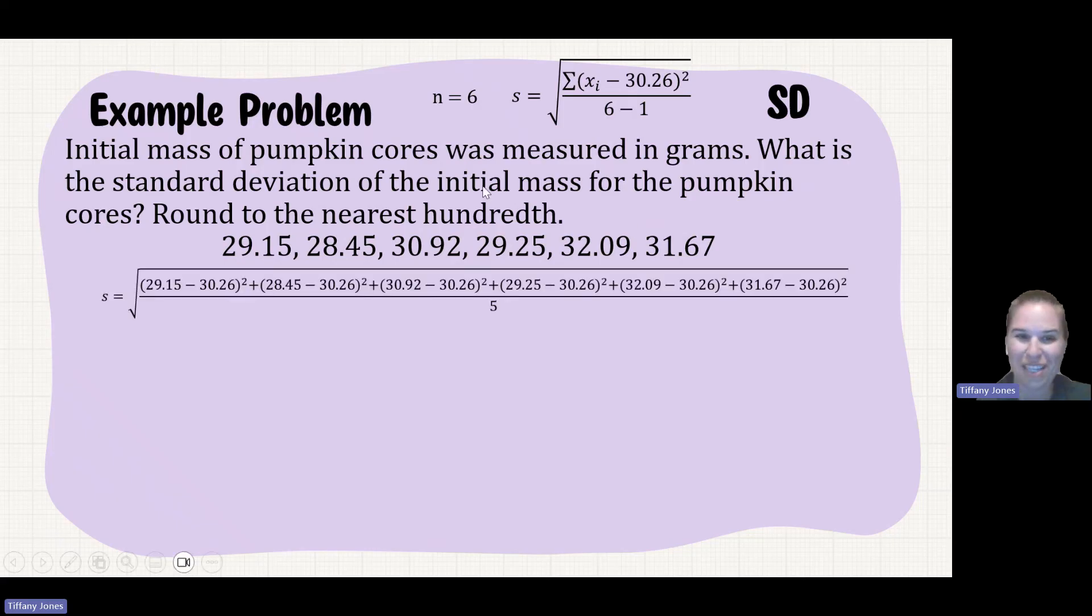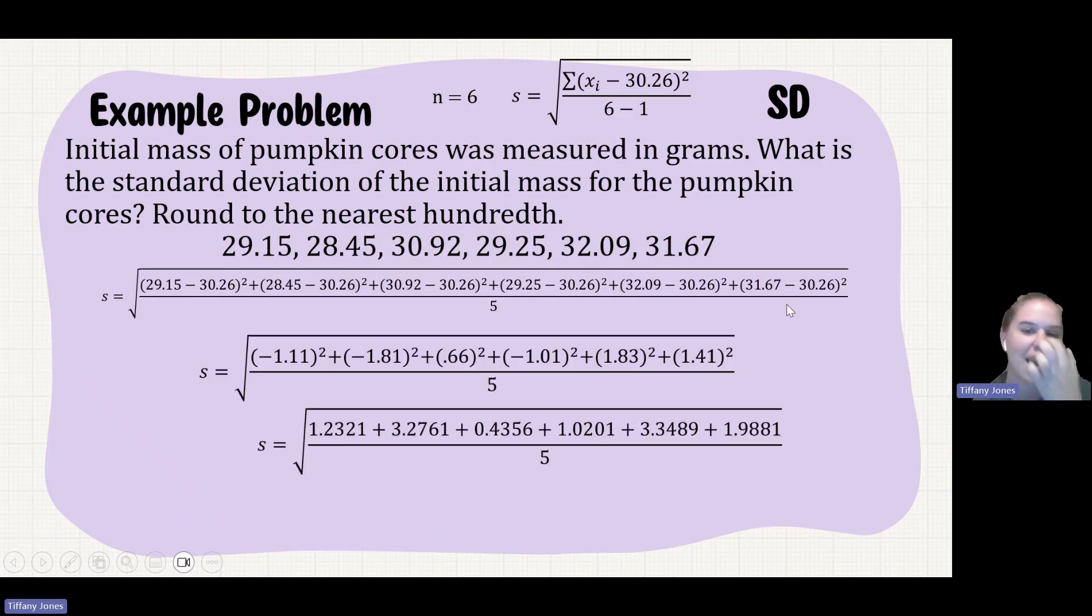So if I sub each of those values into my equation again, 29.15 minus my mean, and then you take each of your values, and you're going to subtract the mean from them, square each of those differences, and then that's gonna add all those together.